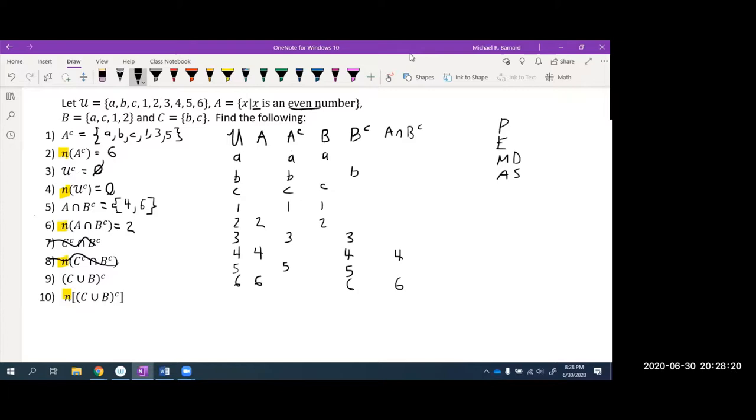So number 9 does have parentheses, so we have to do what's inside the parentheses first, which is the union of C with B. I haven't written out the set C yet, so I'm going to go ahead and write that first. I'm going to switch colors. So C contains the letters B, C.